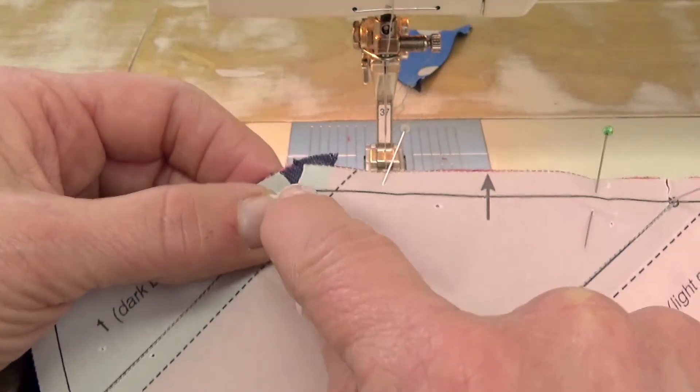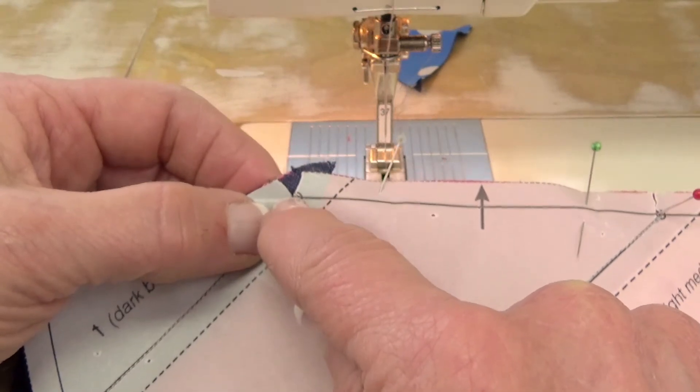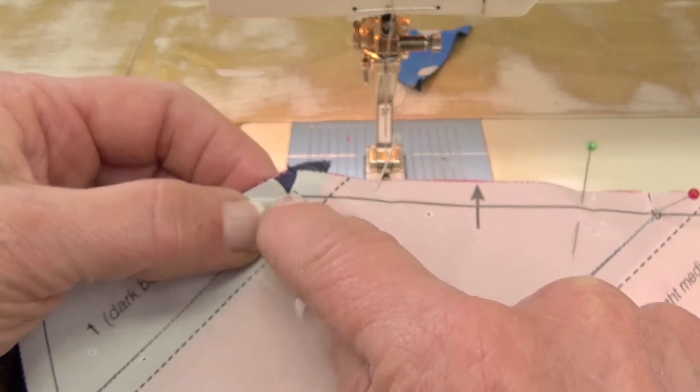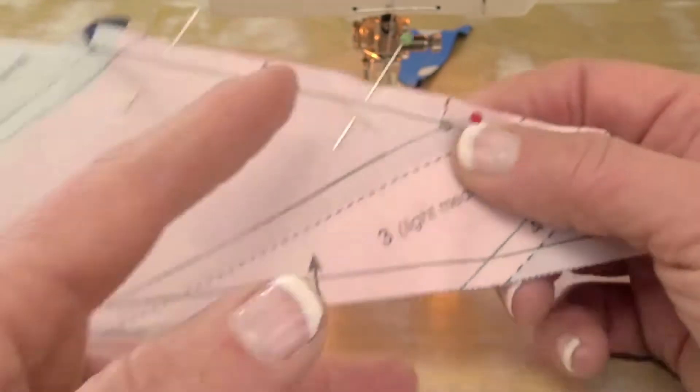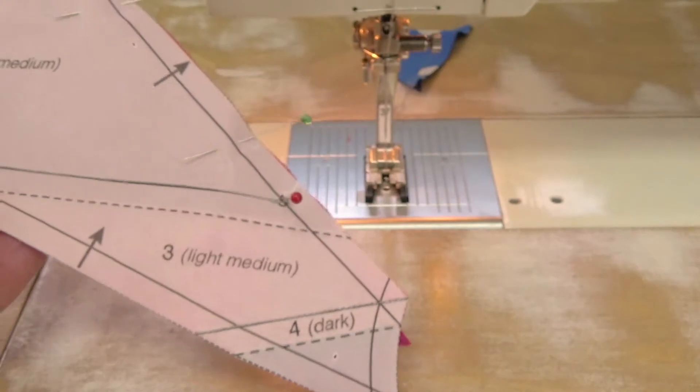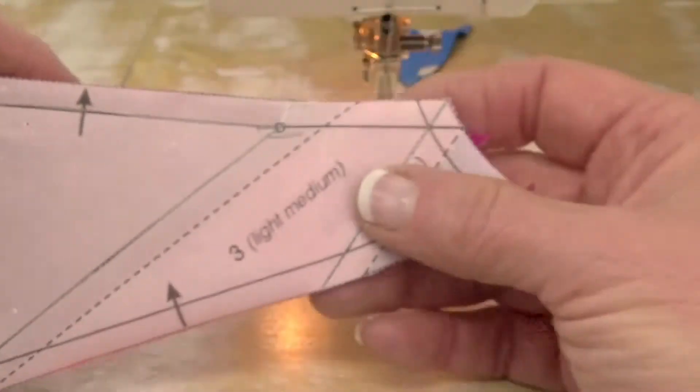So I would begin sewing here. I'd go forward a couple of stitches, backstitch, and then sew to this point and backstitch, removing pins as I go. Once you get that sewn,